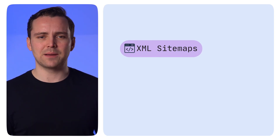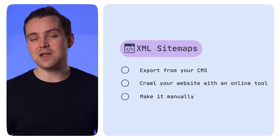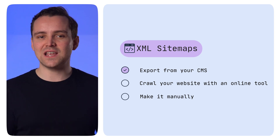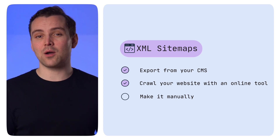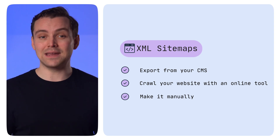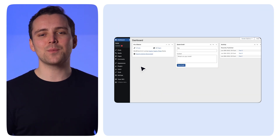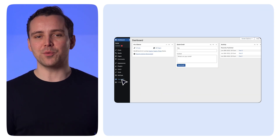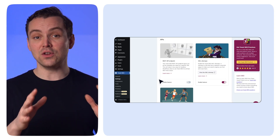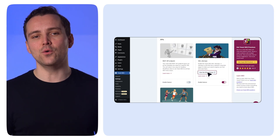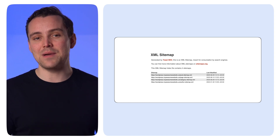Let's start with XML sitemaps. There are three ways to create one: export from your CMS, crawl your website with an online tool, or make it manually. To export an XML sitemap from WordPress, for example, you'll need to grab a plugin like Yoast SEO, and with just a few clicks, you'll have your sitemap.